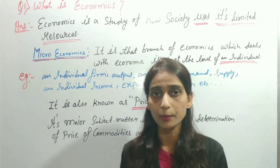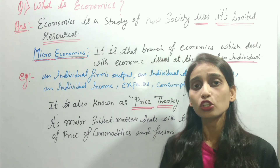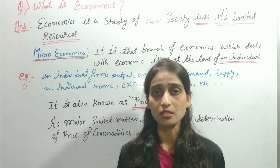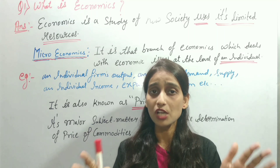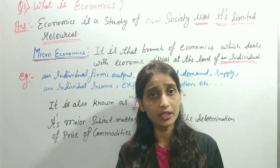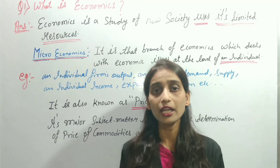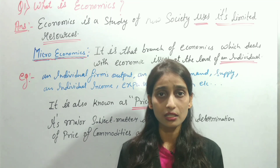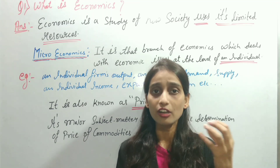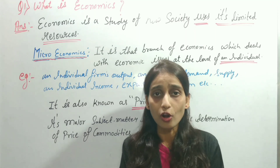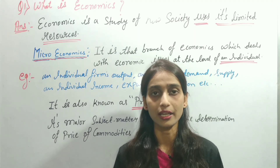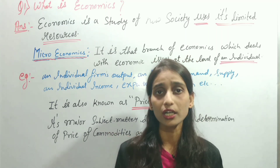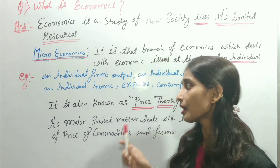For factor pricing, the factors of production are land, labor, capital, and entrepreneurship. For land, you pay rent; for labor, you pay wages; for capital, you pay interest; and for the entrepreneur, the reward is profit. Analyzing all these factors helps determine commodity price — which is why this is called price theory.